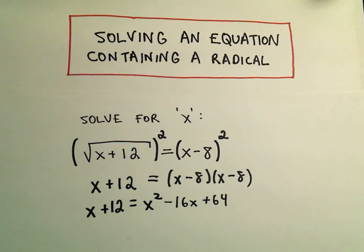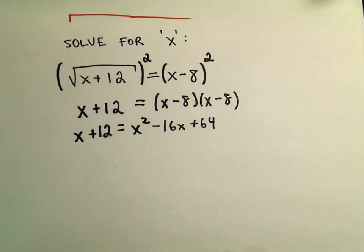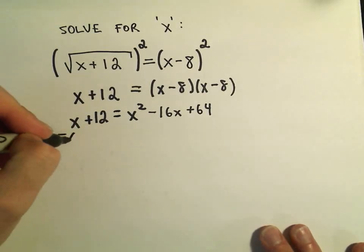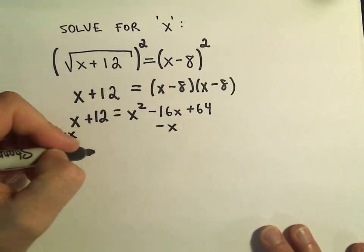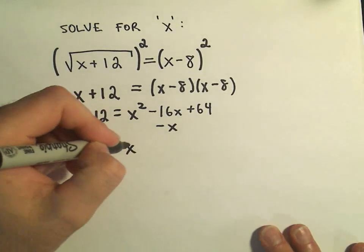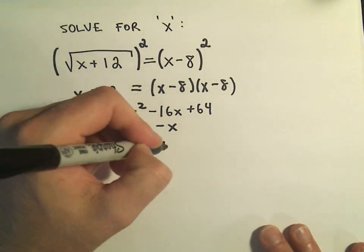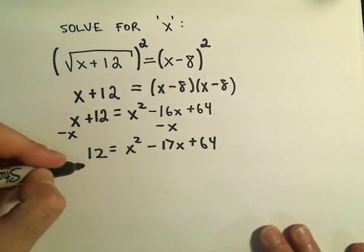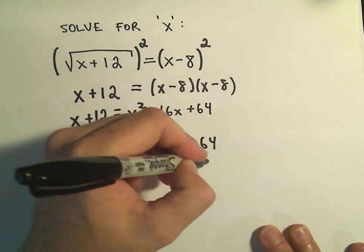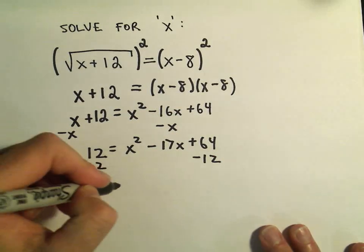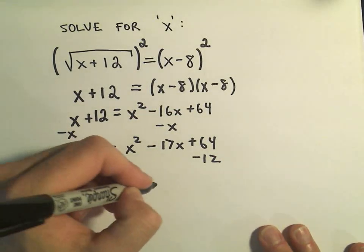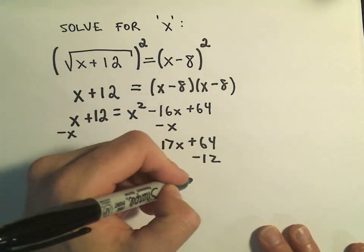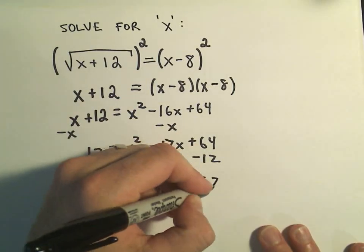And again, now this is just a more familiar quadratic equation. So what I'm going to do is make one side equal to 0. So I'll subtract x from both sides. That'll leave me with 12 equals x squared minus 17x plus 64. And then I'm going to have to subtract 12 from both sides. So we'll get 0 on the left. We have x squared minus 17x. 64 minus 12 is going to be positive 52.